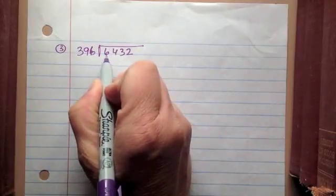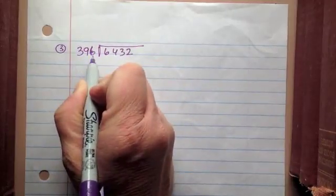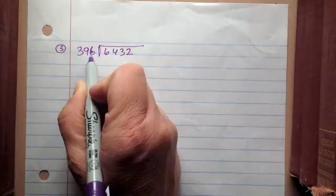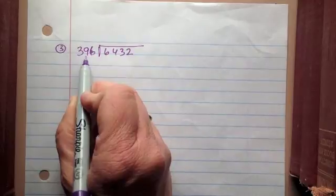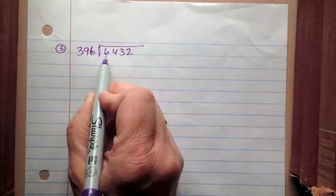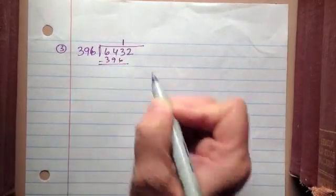I'm going to start by looking at just 643 divided by 396, and that's going to be only one time because if I estimate this to be 400, 400 times 2 would be 800, which is well over 643. So I already know it's just going to be one time. So 1 times 396 is 396, and I need to subtract.